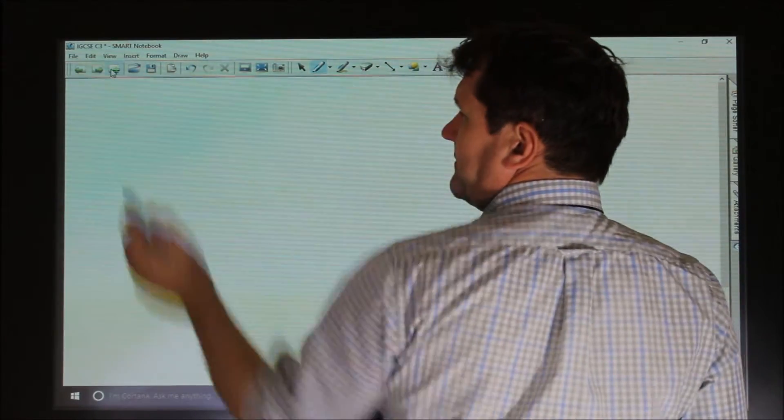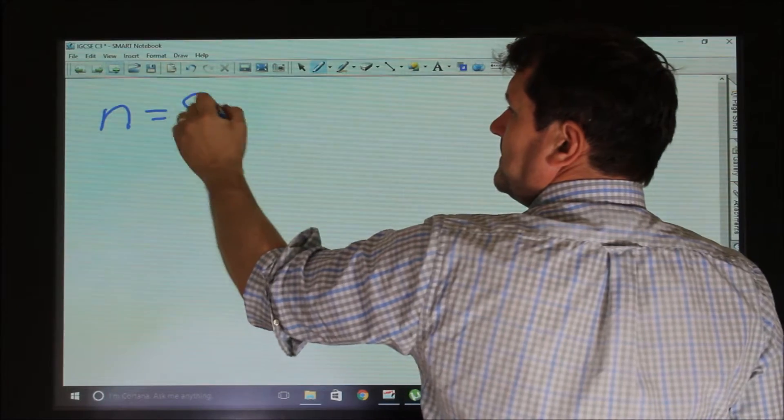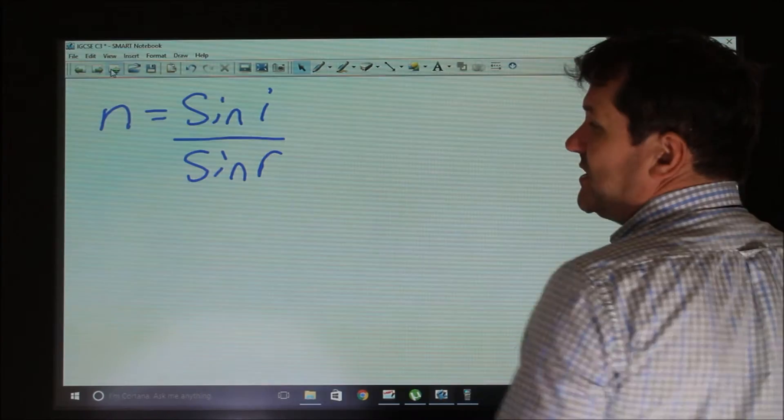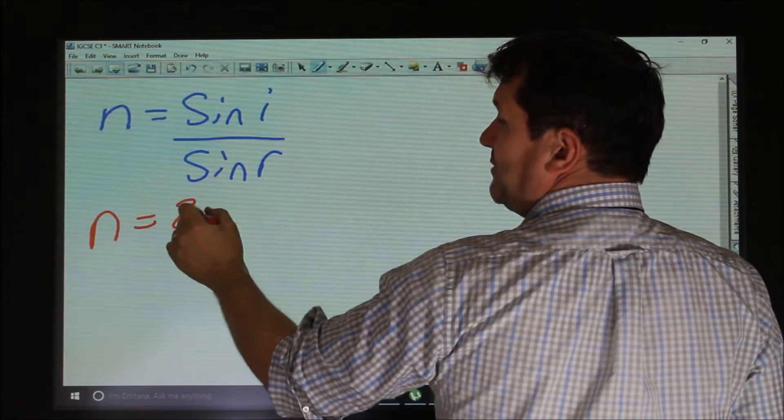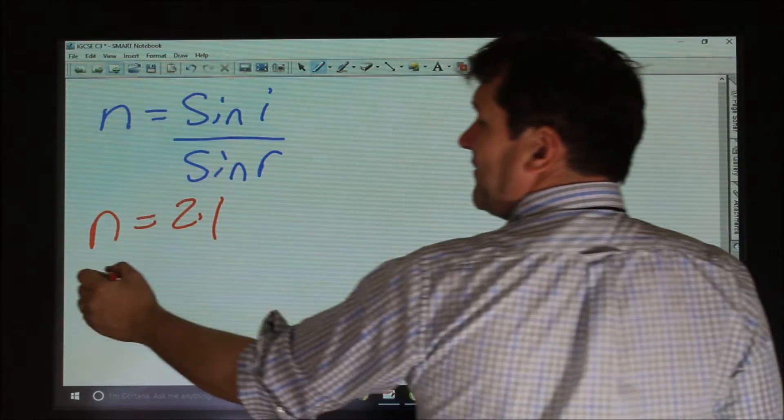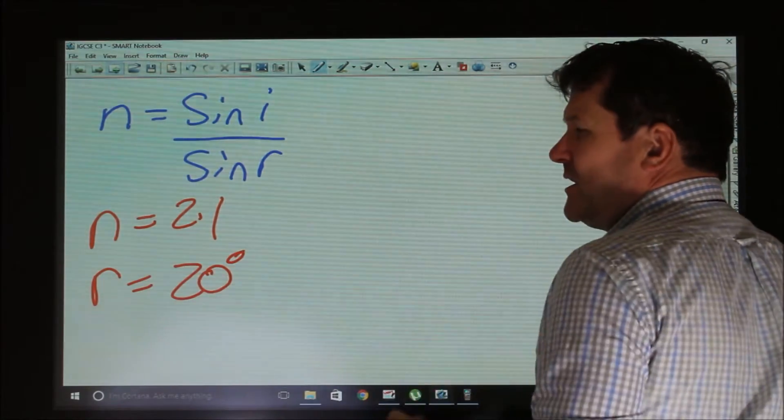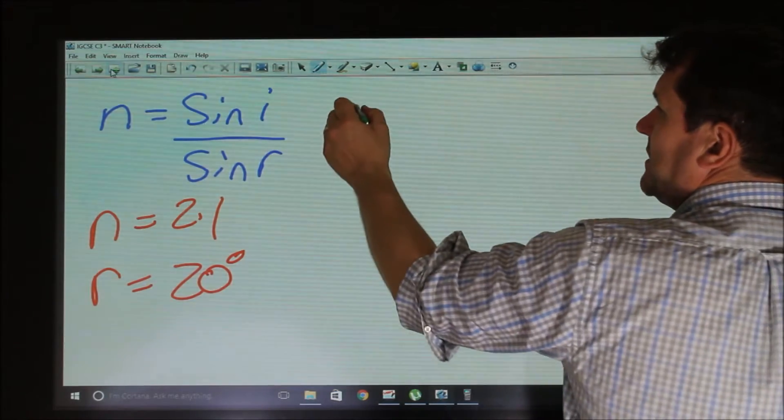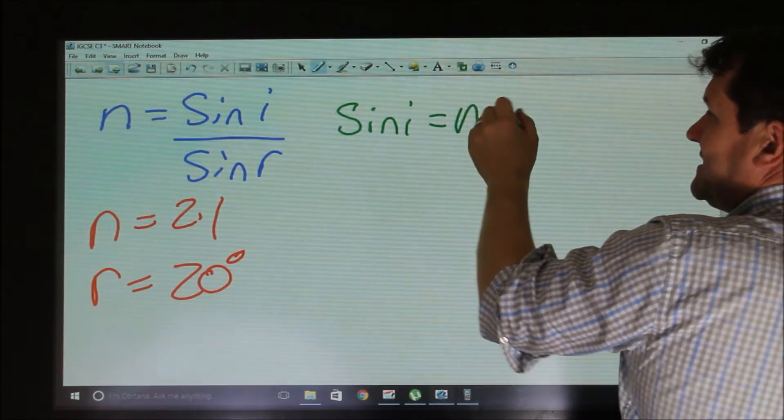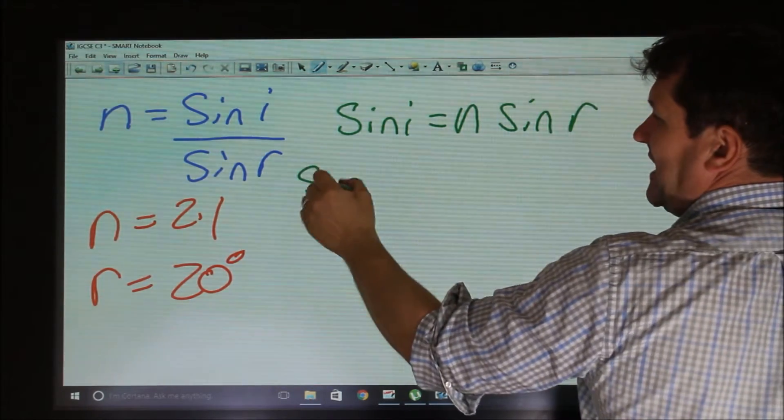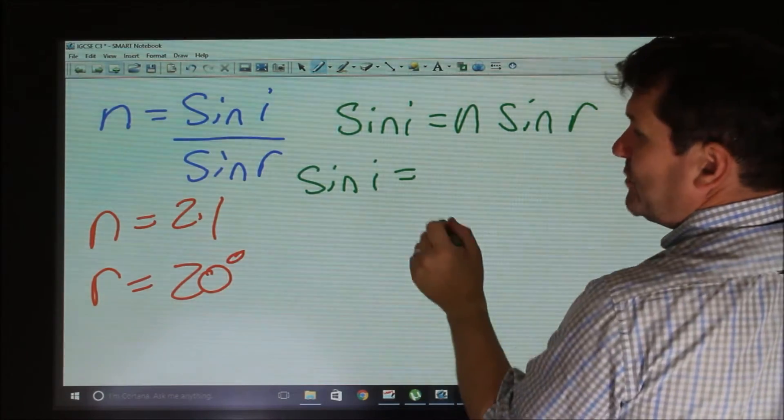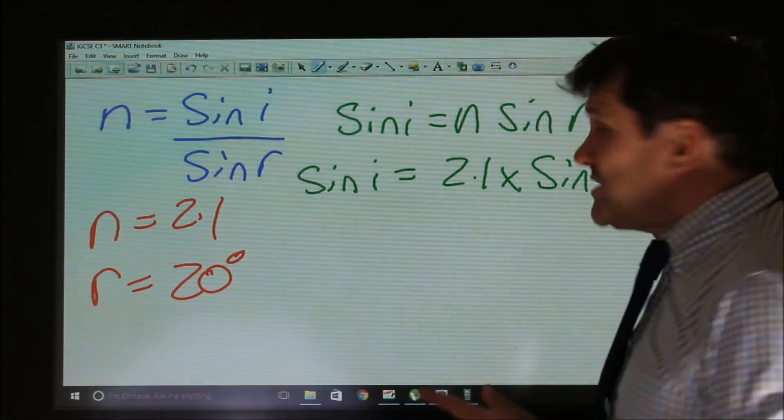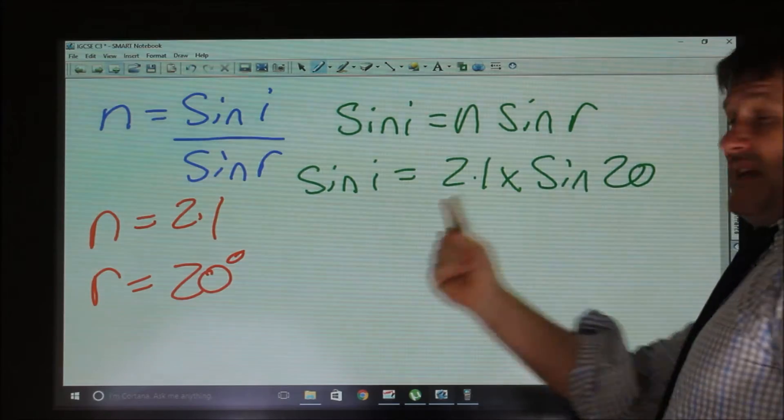So for example, if a question says to us: the refractive index of a substance is 2.1 and the angle of refraction equals 20 degrees, what is the angle of incidence? So we would say sine I equals N sine R. So sine I equals 2.1 times the sine of 20. Now if you wanted to, you could work this out at this stage.